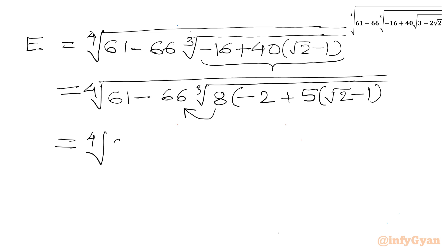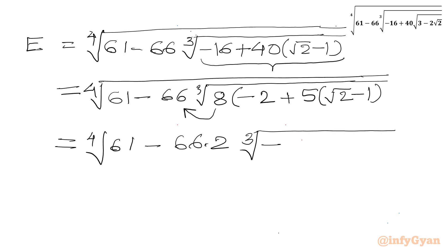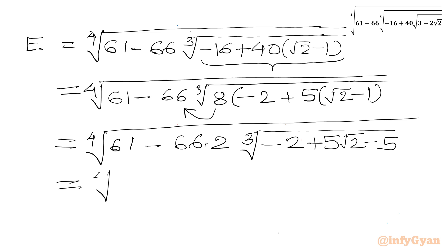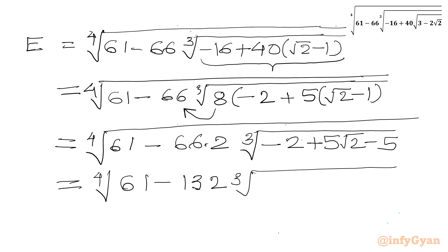Expanding the bracket: −2 + 5√2 − 5 = 5√2 − 7. So we get E = 4th root of 61 minus 132·∛(5√2 − 7).